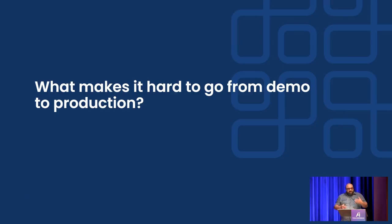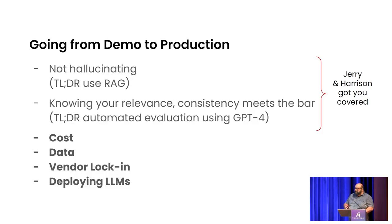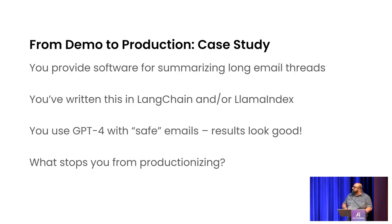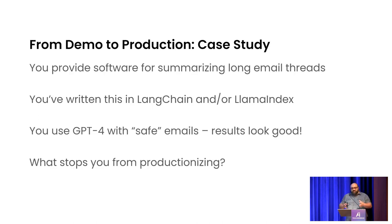Let's talk about what it takes to go from demo to production. Today at the AI conference, I was preceded by Jerry and Harrison who talked about RAG and relevance. I'm not going to recover what they talked about. I'm going to focus on cost, data, vendor lock-in, and deploying LLMs. I want to explain why cost and quality are so tricky.